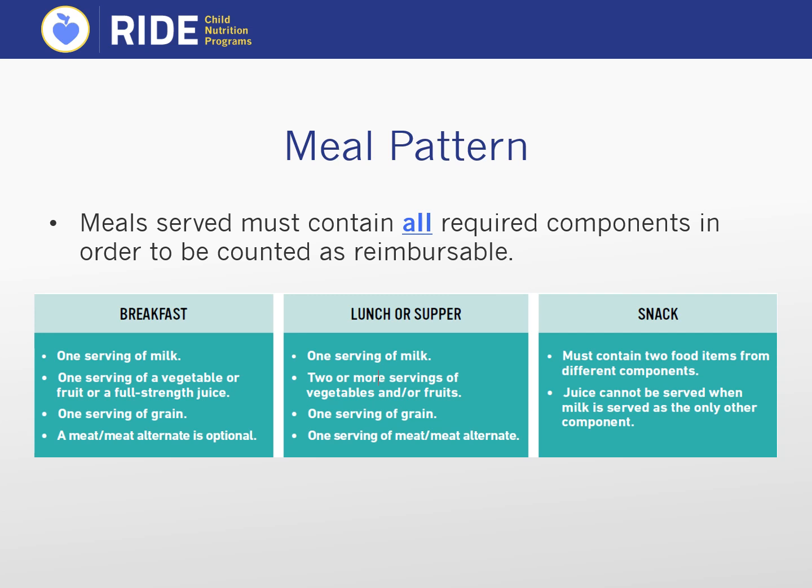The SFSP meal patterns are as follows. For breakfast, the meal must include milk, fruit or vegetable or a combination of both, and a grain. At lunch and supper, meals are only considered complete and reimbursable if they contain milk, a grain, a meat or meat alternate component, and the minimum required two servings of fruit and/or vegetables. For snack, two of the four meal components must be served in any combination the sponsor wishes. Please remember that in the summer program, fruits and vegetables are considered the same component—therefore you cannot serve apples and celery as a reimbursable snack. In addition, you cannot serve two different liquid components as the entire snack, so serving fruit or vegetable juice and milk is not a reimbursable snack.